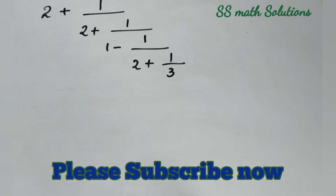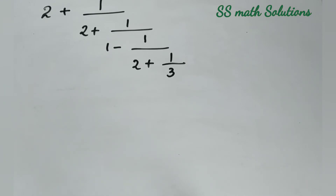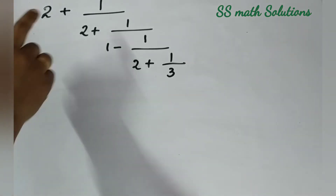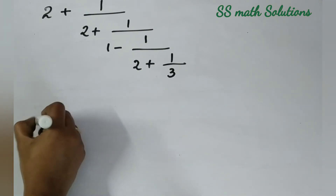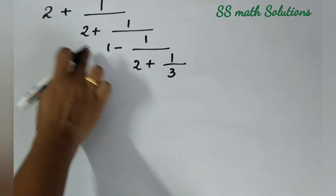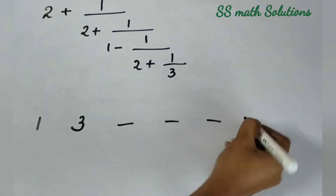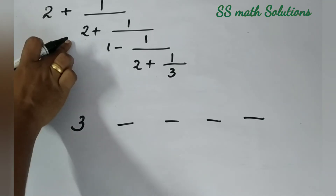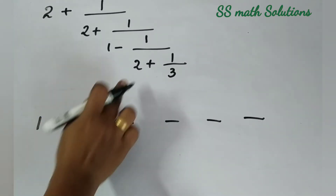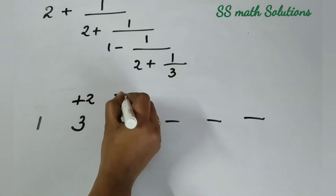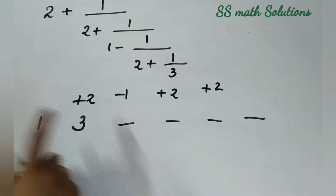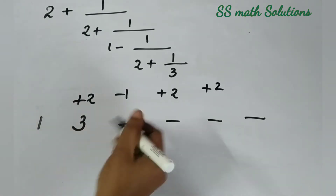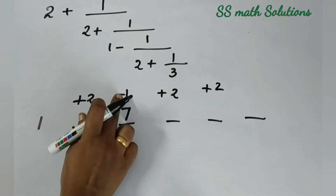Here is our next question: 2 plus 1 divided by 2 plus 1 divided by 1 minus 1 by 2 plus 1 by 3. This case has no leading '1 divided by 1 divided by 1', so we do not reciprocate the final answer. First, we take 1 by 3 here. Count 1, 2, 3, 4 numbers — so 4 extra numbers. We start writing from above the second number: plus 2, minus 1, plus 2, plus 2.